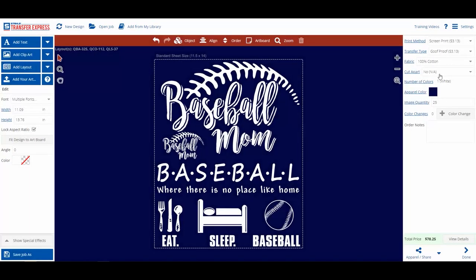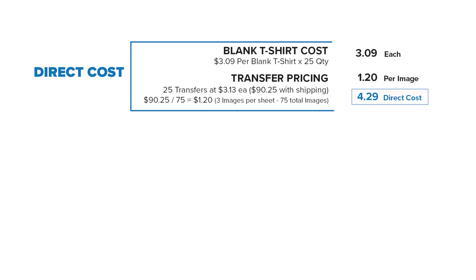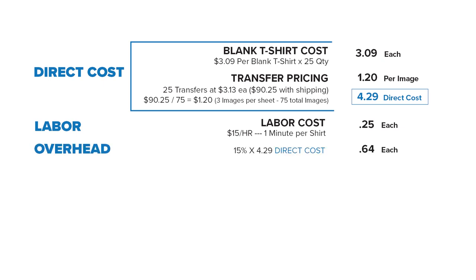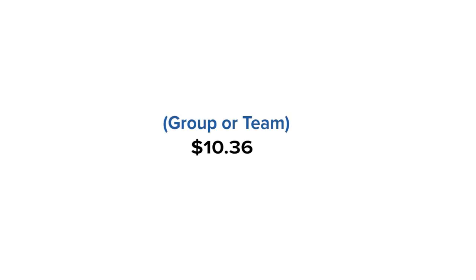Let's compare the strategies for this one-color shirt using Goof Proof with a quantity of 25. With the cost-based pricing strategy, you add your direct labor, direct materials, and your overhead and you'll come to $5.18 per shirt. If you're selling wholesale — one person buying all 25, like a group or a team — your price would be $10.36. If you're selling retail, like on an Etsy store, you can charge $20.72.